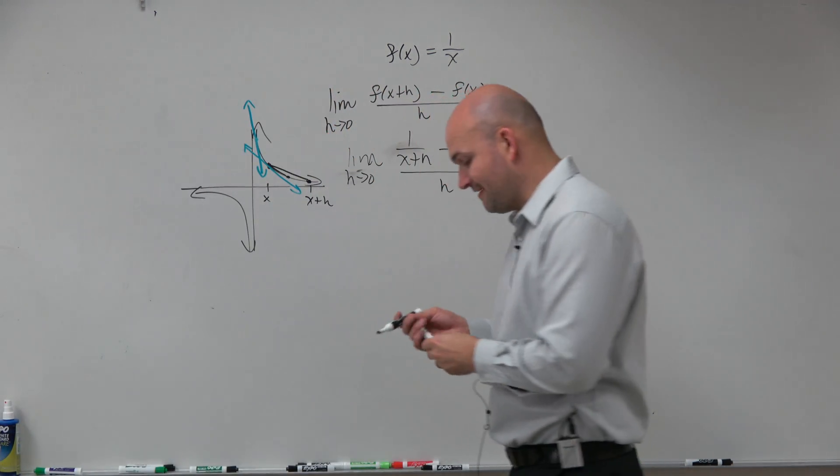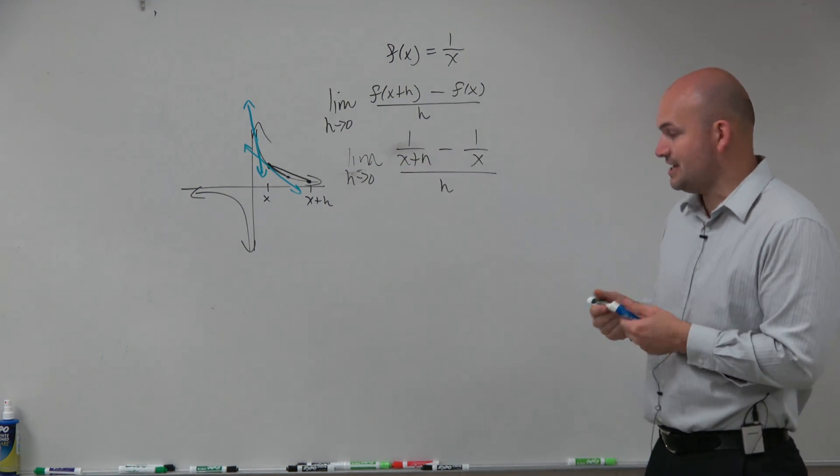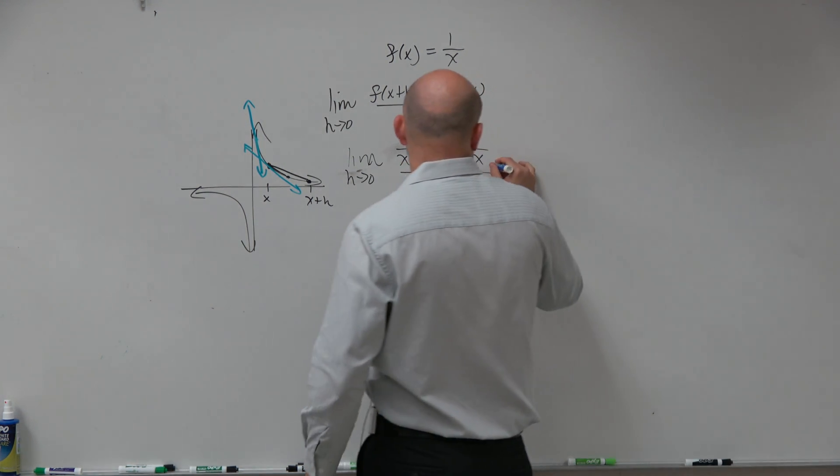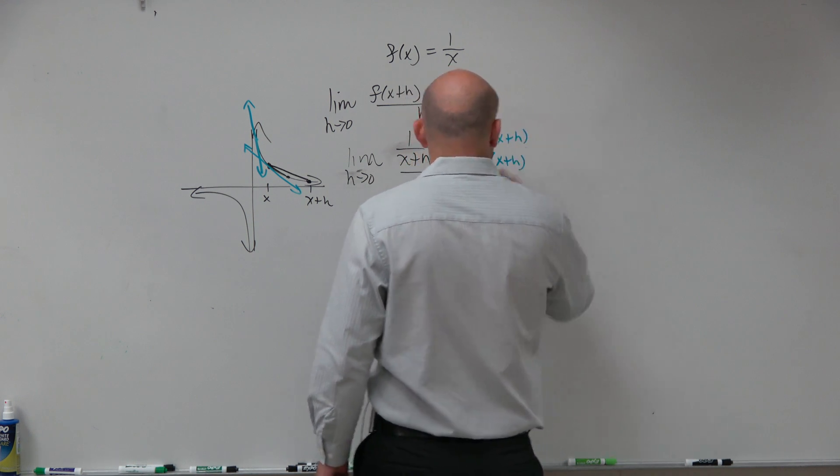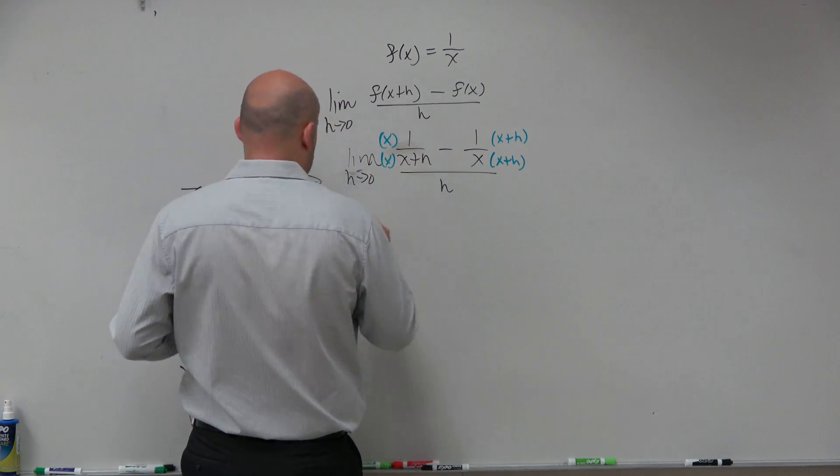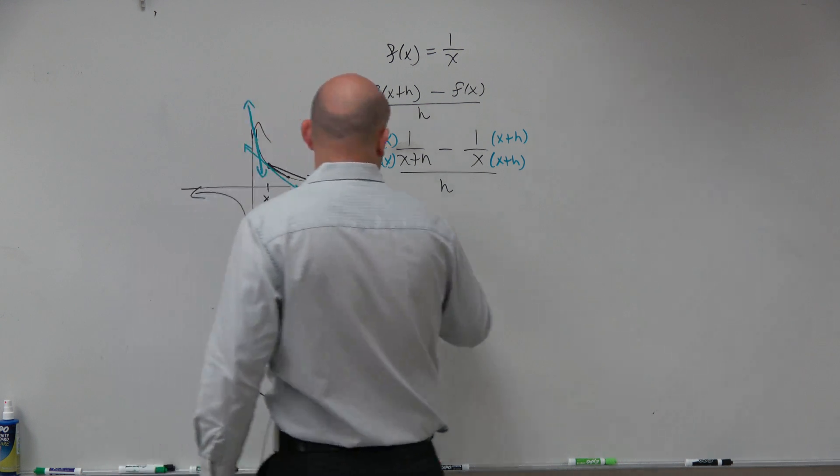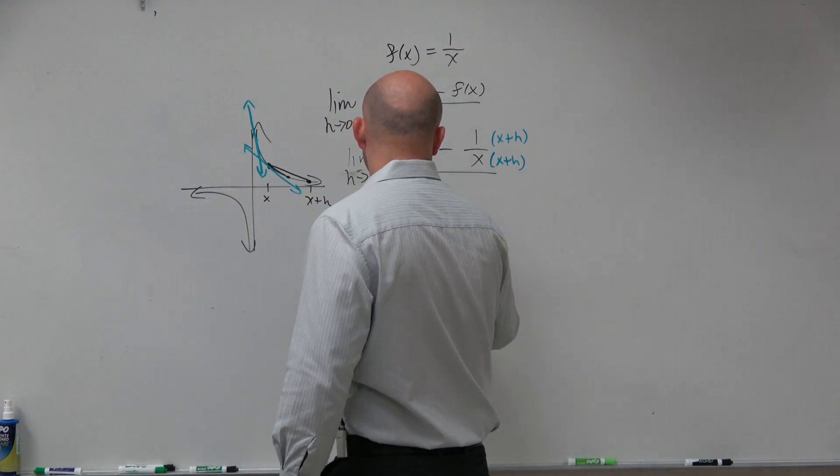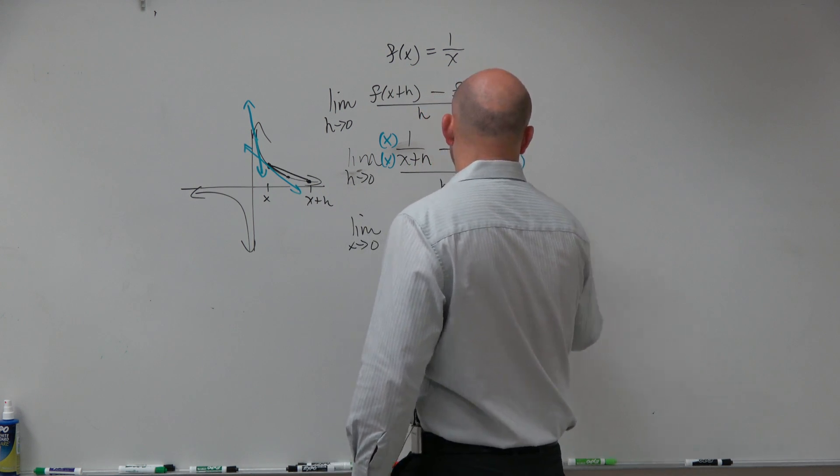Now, to simplify this, we have to combine our rational expressions. So I need to subtract 1 over x plus h and 1 over x. That means I need to get common denominators, which would be x times x plus h. So I multiply on both sides, and now I obtain limit as h approaches 0 of x over x times x plus h minus x plus h over x times x plus h.